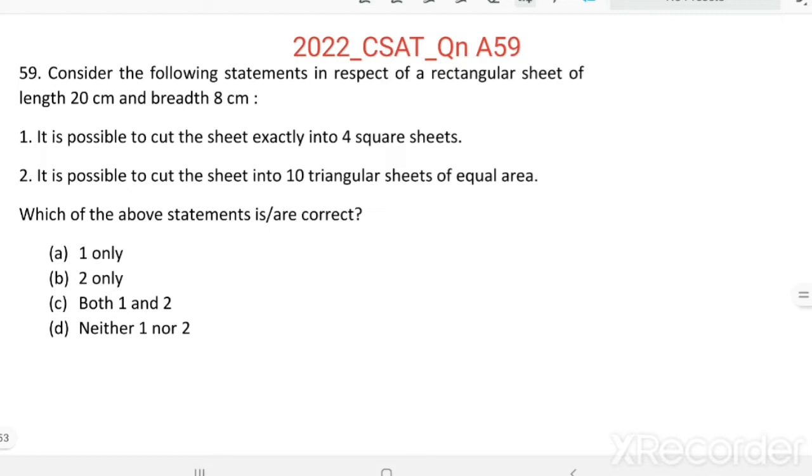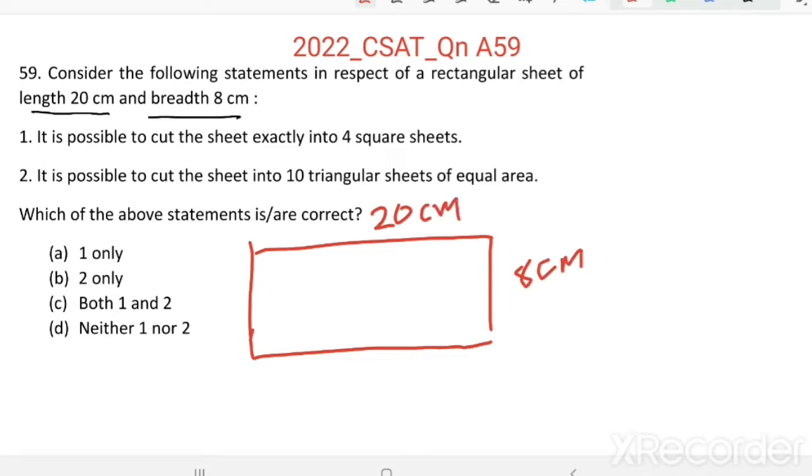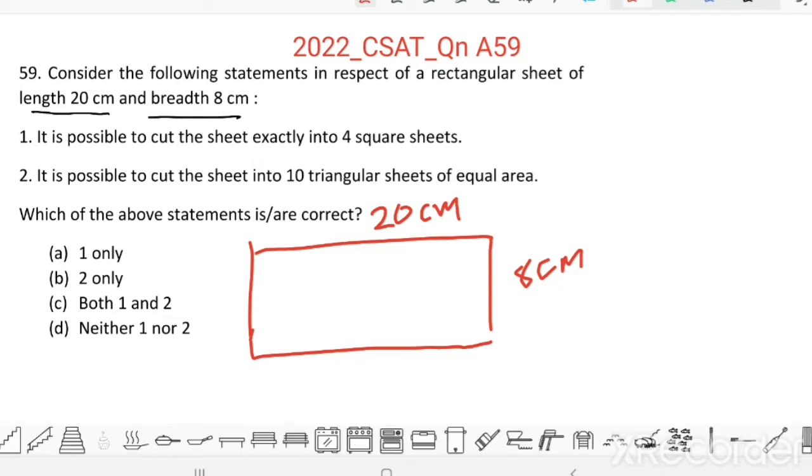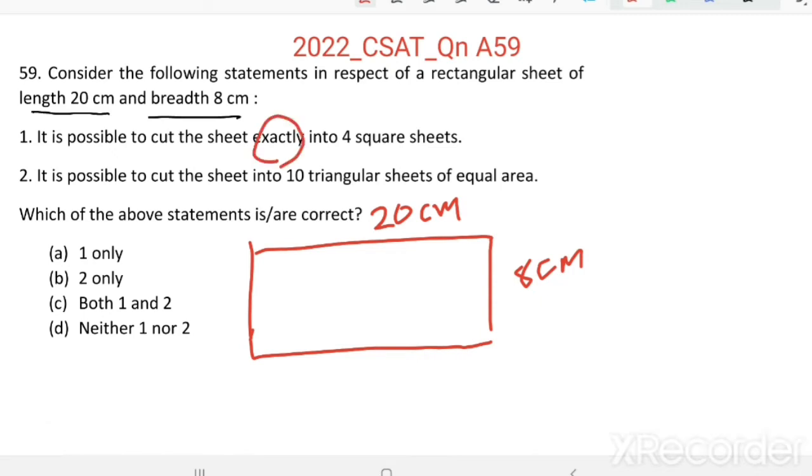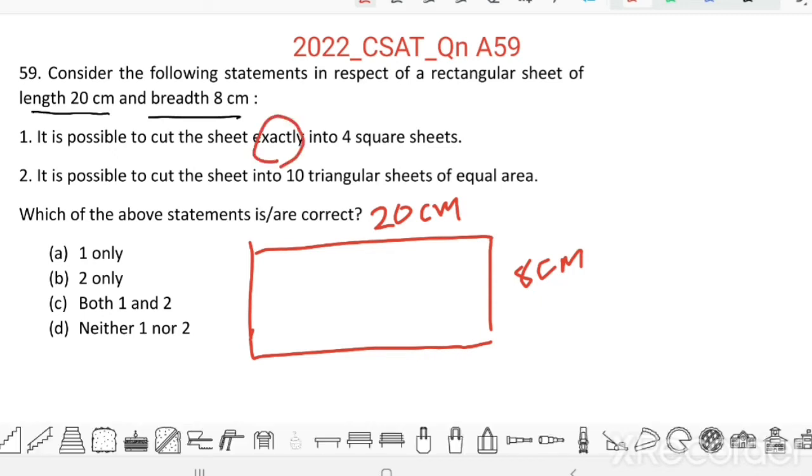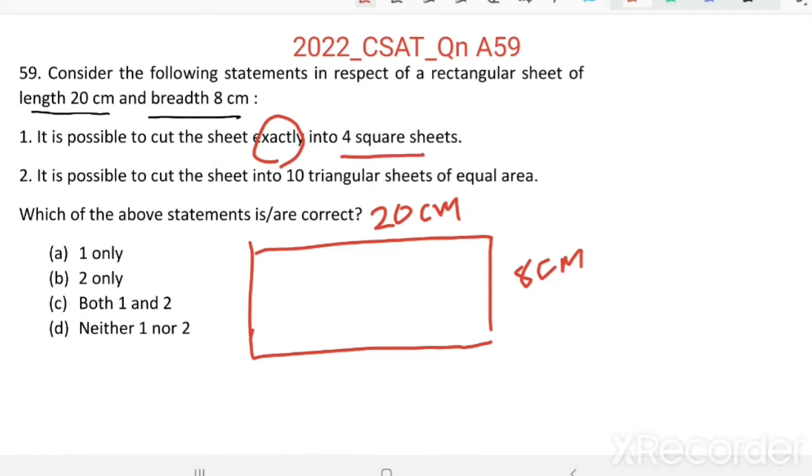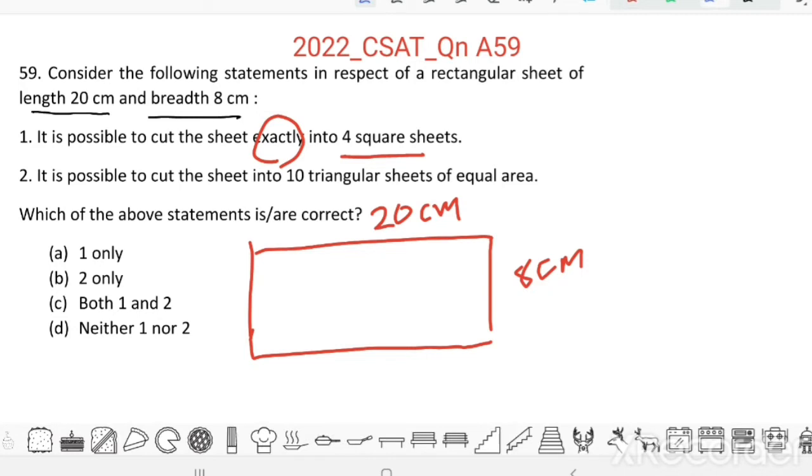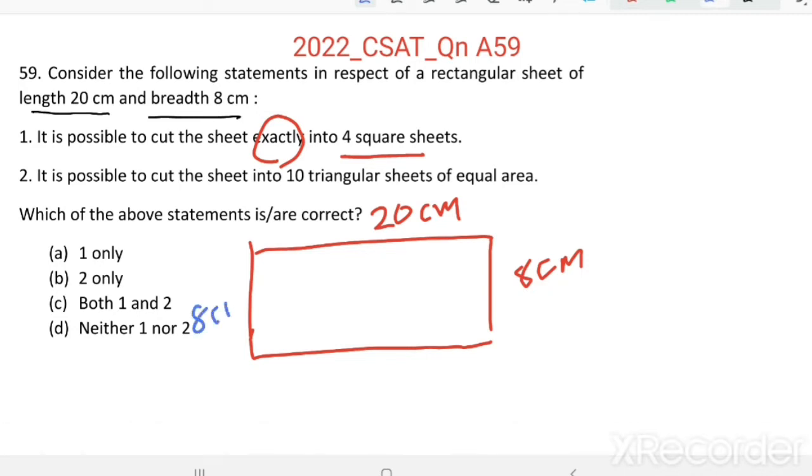Here we have a rectangular sheet of length 20cm and breadth 8cm. First statement: It is possible to cut the sheet exactly into 4 square sheets. Exactly means we have to use this sheet completely and we have to make 4 square sheets. Suppose I am cutting this sheet into 2 eight by eight squares.